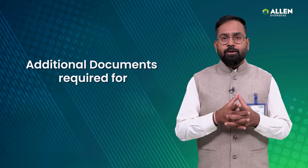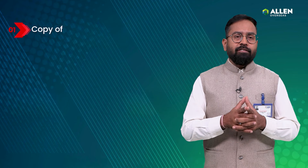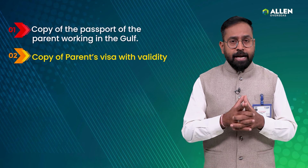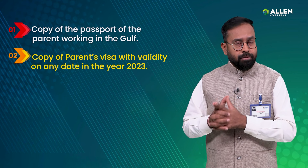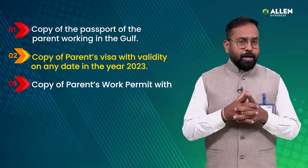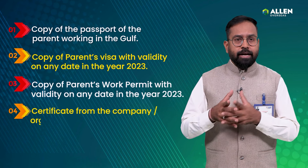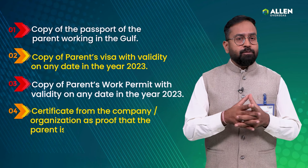Now let's talk about the additional documents required for the CIWG quota. For those applying under CIWG, the following additional documents are required: a copy of the passport of the parent working in the Gulf country; a copy of the parent's visa with validity on any date in the year 2023; a copy of the parent's work permit with validity on any date in the year 2023; and a certificate from the company or organization as proof that the parent is working in the Gulf country. If a parent has been working in the Gulf until any date in 2023, then the certificate may reflect the same.